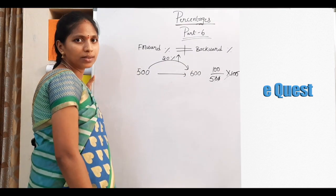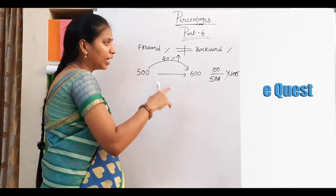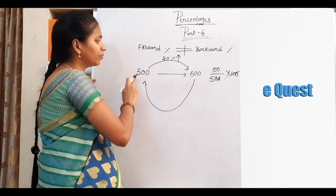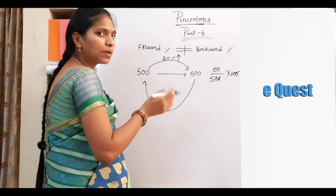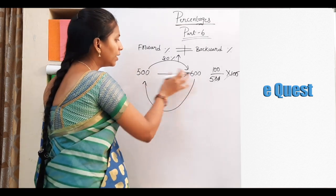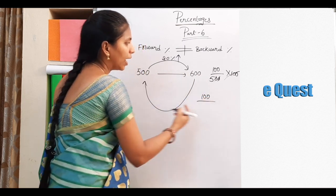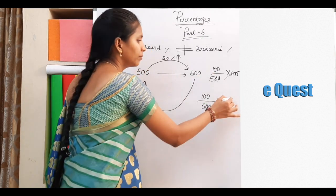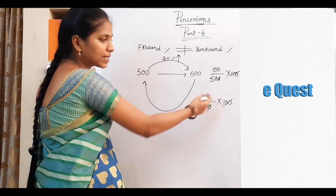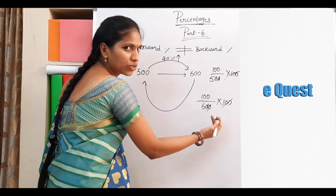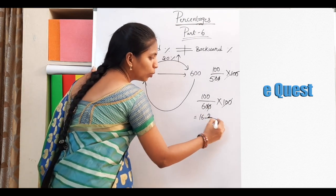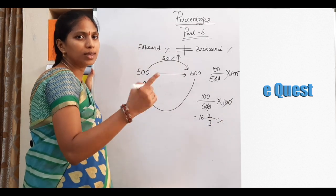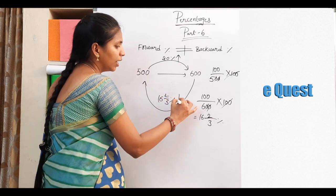After some days, your father decreased 100 rupees — that means from 600 to 500. What is the percentage change? Difference is 100, but initial value is 600 into 100: that is 1 by 6 into 100, which gives 16 and 2 by 3 percent, or 16.66% decrease. The percentages are not the same — that's why forward percentage is not equal to backward percentage.